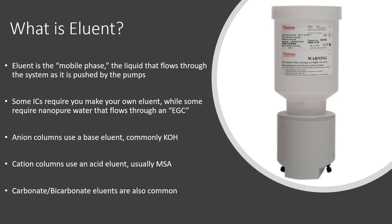Anion columns use a base which is usually potassium hydroxide, and cation columns use an acid eluent which is usually methane sulfonic acid. You may hear the term carb bicarb systems, and that's because carbonate and bicarbonate eluents are also very common with IC.